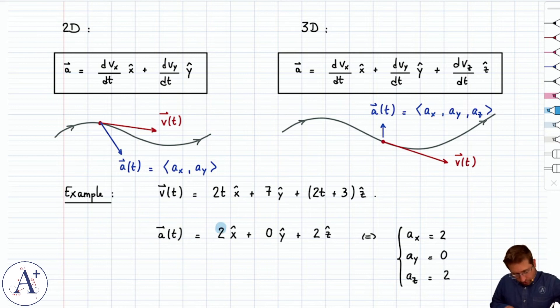Note, by the way, that all the components are constants, right? So, I did that on purpose because, remember, we discussed previously the acceleration vector and the fact that it could have components that depend on time, sure, but for the most part in this class, the components will be constants, making the acceleration vector a constant vector. So, that's why I chose v of t the way I did in this case.